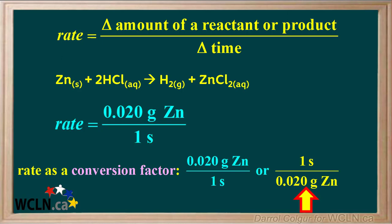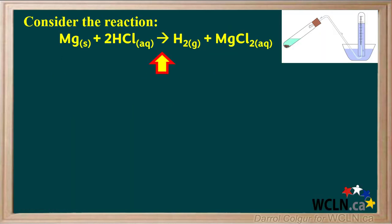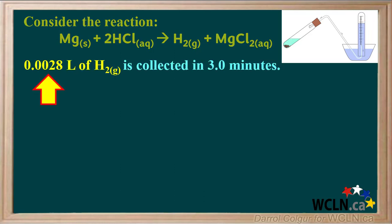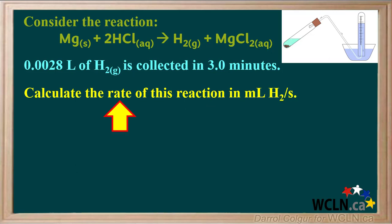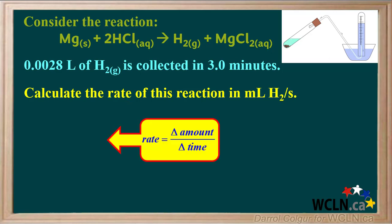We can use whichever conversion factor we need to give us the units we need for the answer in a calculation. For example, magnesium metal reacts with aqueous hydrochloric acid to form hydrogen gas and aqueous magnesium chloride. The hydrogen gas can be collected by displacement of water in an apparatus like this. We're told that 0.0028 liters of hydrogen gas is collected in three minutes, and we're asked to calculate the rate in milliliters of H2 per second. Rate is expressed as the change in an amount over change in time, so we can express rate as 0.0028 liters of hydrogen over three minutes.